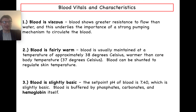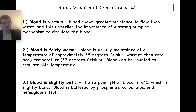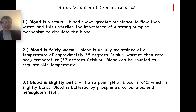The blood is slightly basic. Most bodily intracellular fluids have a neutral pH around 7, but blood's pH set point is about 7.40, which is slightly basic. We absolutely want blood maintained at this basic pH; there would be catastrophic consequences if it got too high or too low. Because we don't want pH to change too much, blood is buffered by a number of chemicals including phosphates, carbonates, and hemoglobin itself.